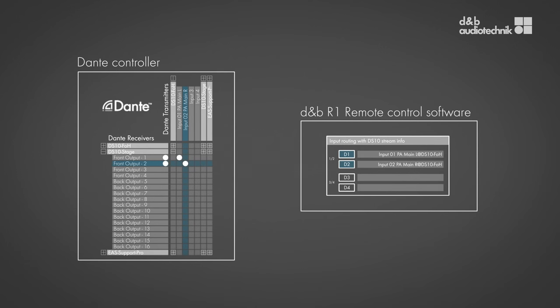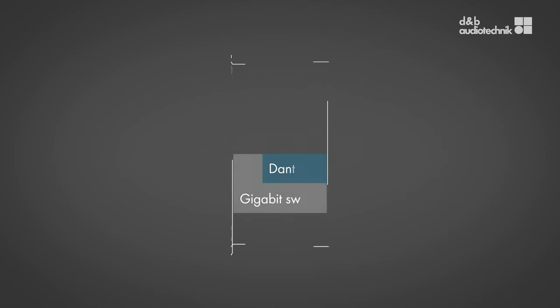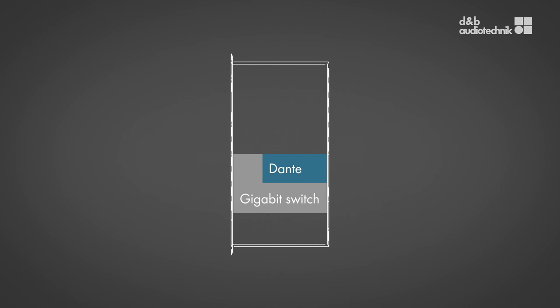D&B system amplifiers and the R1 remote control software display this information for easy routing. Additionally, the DS10 can also serve as a break-in box into a Dante network for up to four audio channels.